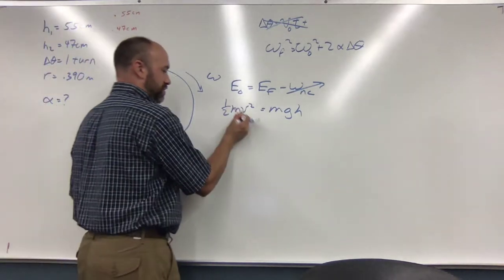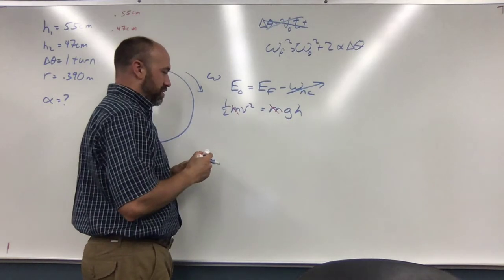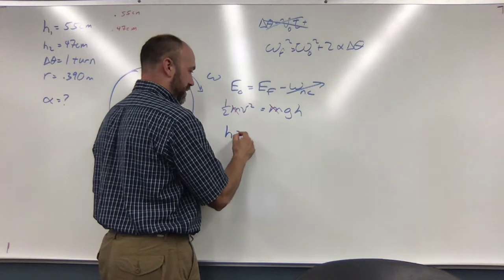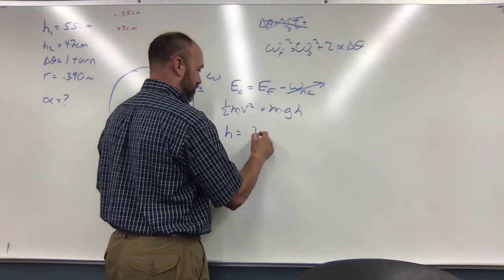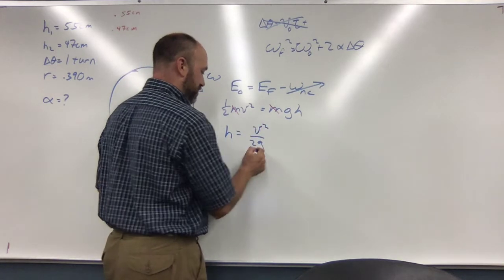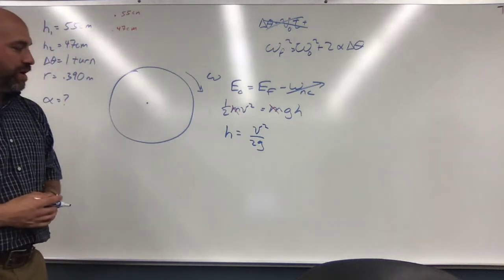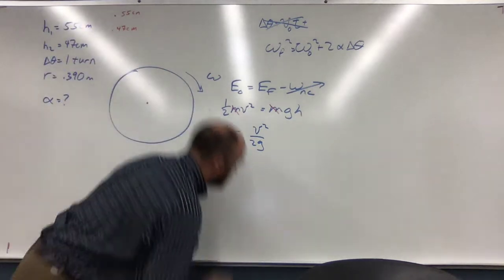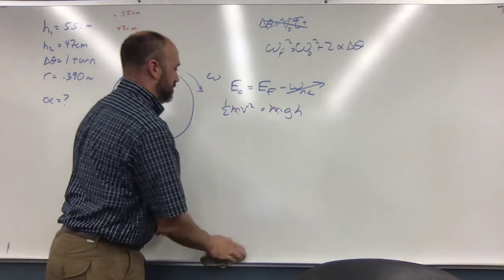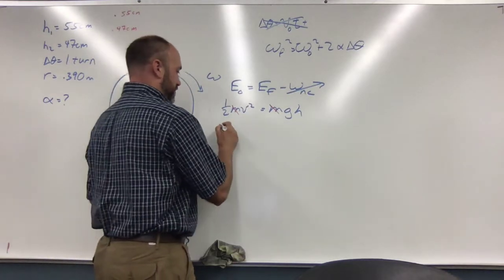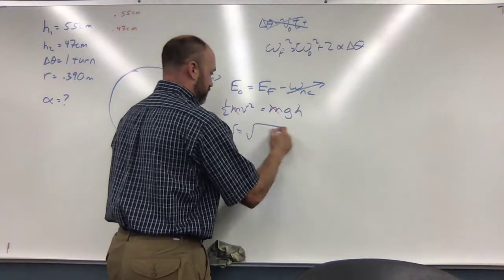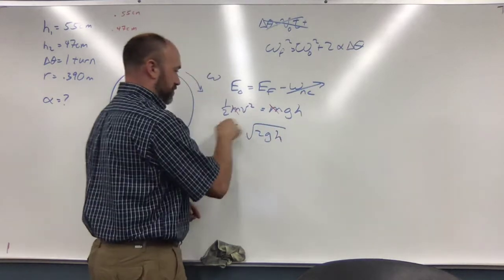M cancels out. And so we can solve this for H. H equals V squared over 2G. So we don't care about that, do we? We want V. So V equals square root of 2GH.